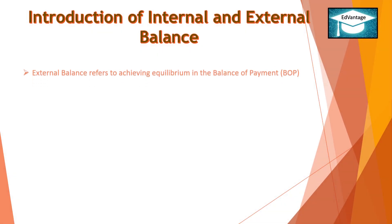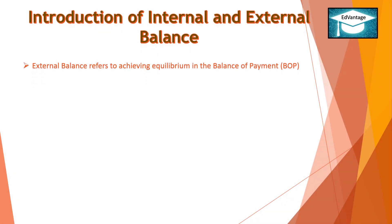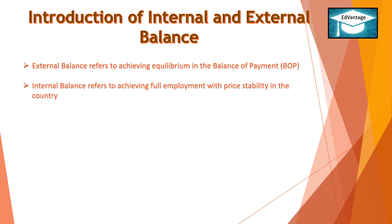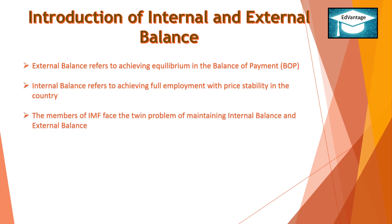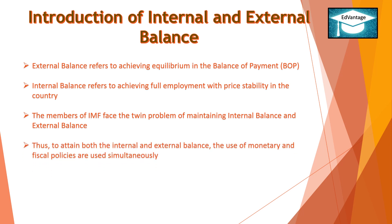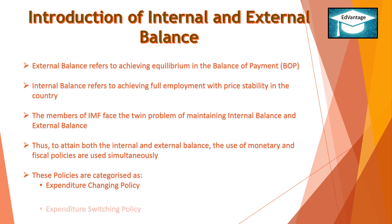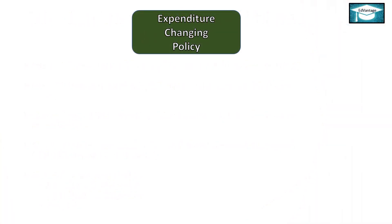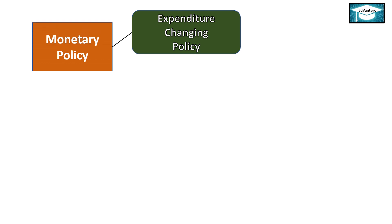External balance refers to achieving equilibrium in the balance of payments. Internal balance refers to achieving full employment with price stability in the country. The members of IMF face the twin problem of maintaining internal balance and external balance. Thus, to attain both, the use of monetary and fiscal policies are used simultaneously. These policies are categorized as: Expenditure Changing Policy, Expenditure Switching Policy, and Policy Mix. Expenditure Changing Policy involves use of monetary policy and fiscal policy.